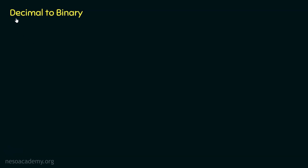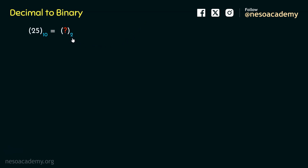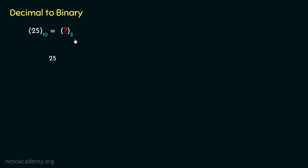Coming to the conversion from decimal to binary, at first we are going to observe how it is done, then we are going to decode it. We will learn the approach by finding out the equivalent binary of the decimal number 25. The conventional approach is to take the decimal value first and then perform the integer factorization using the base of the number system to which we would like to convert. Since we are looking for the equivalent binary, which is a number of base 2, we will perform the integer factorization using the value 2.